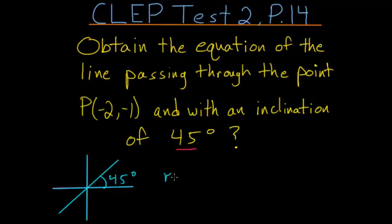And lines that have this property of a 45 degree angle here, their slope, or m we could say, is equal to 1.